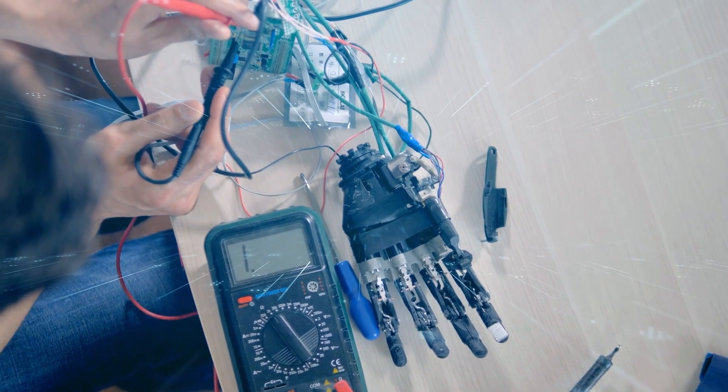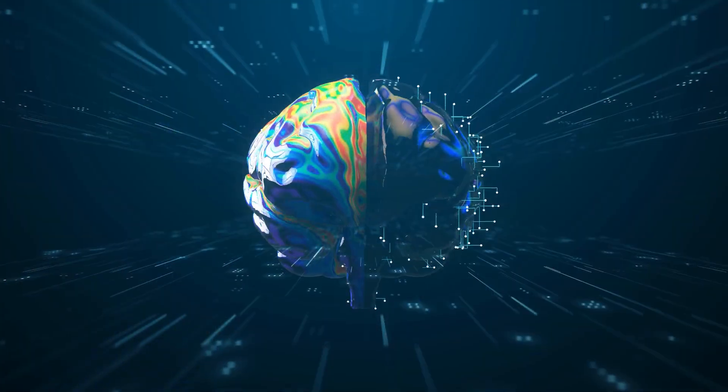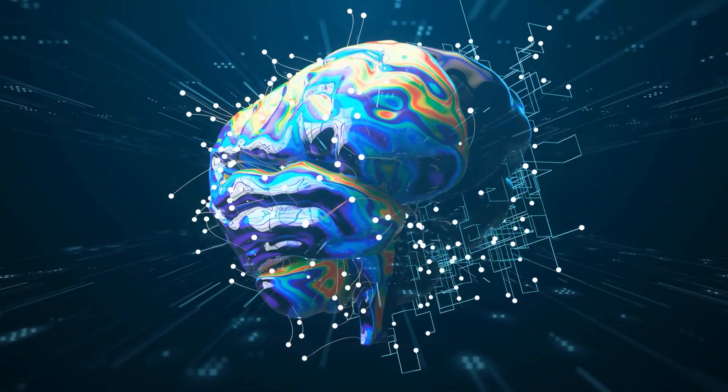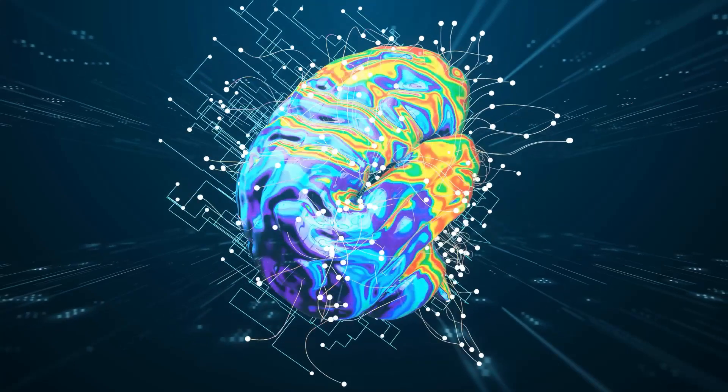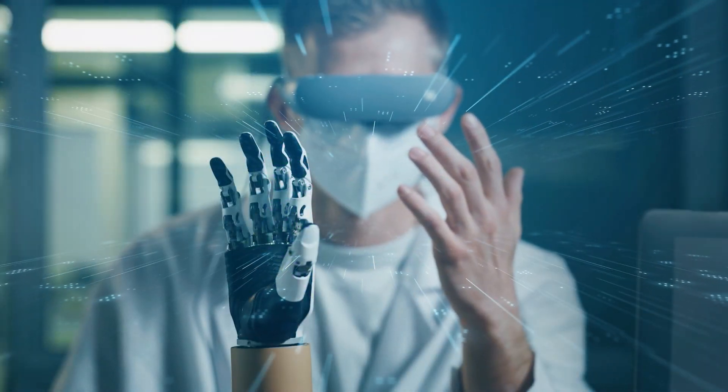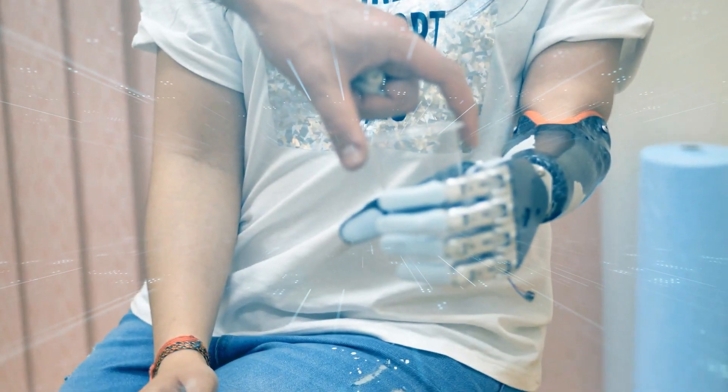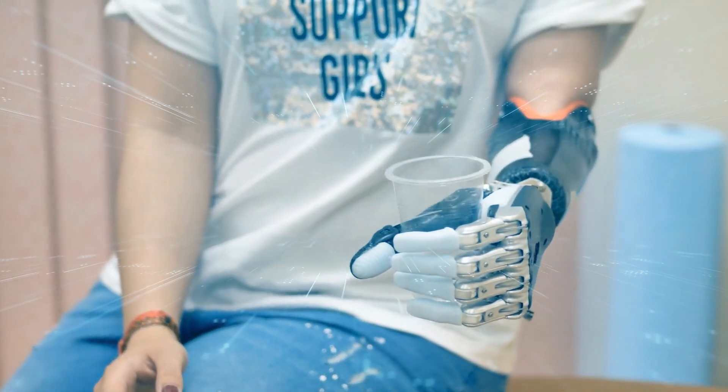Prosthetic Limb Control. For amputees, Neuralink could make prosthetic limbs feel and work like real ones. The BCI technology reads the brain signals and sends them to the prosthetic limb, allowing it to move just like a natural limb would, giving people back their freedom and normalcy.